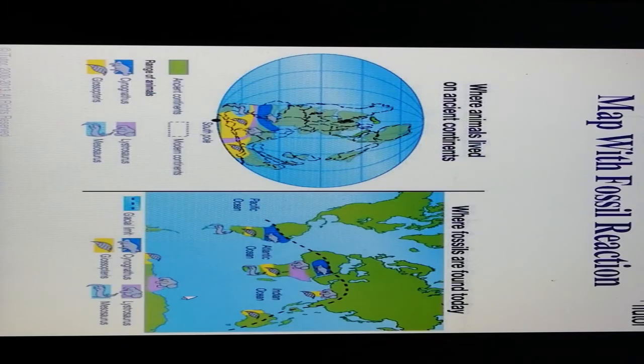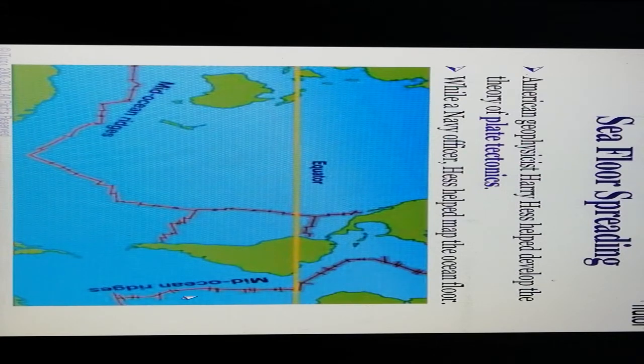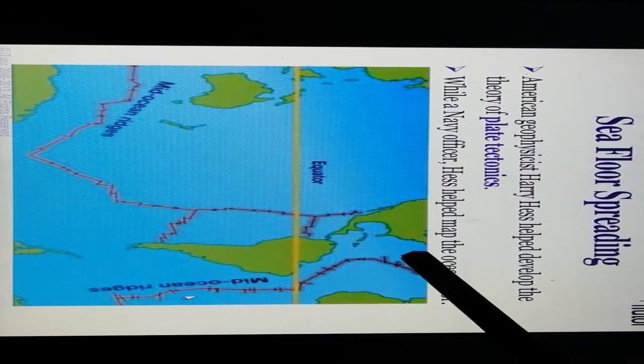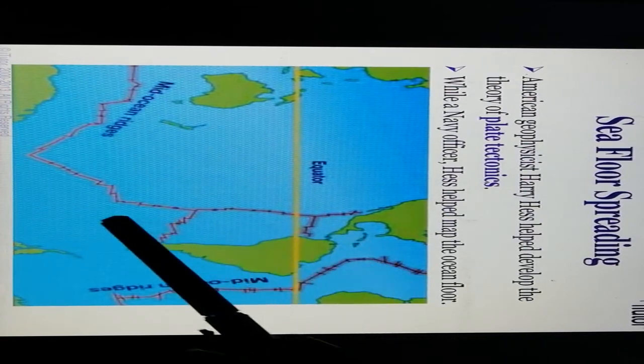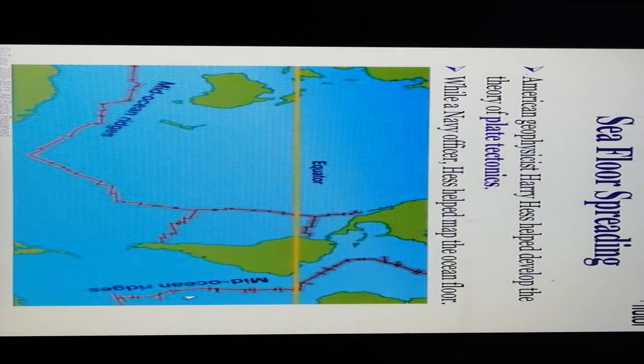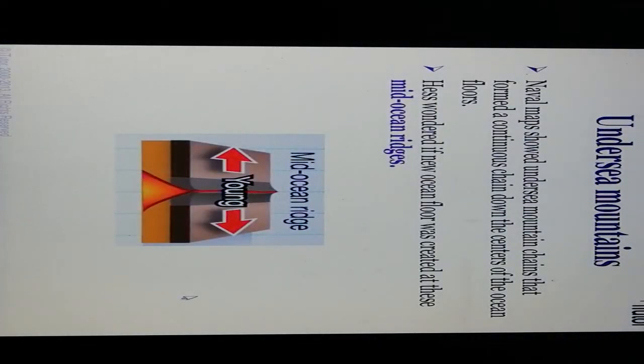Sea floor spreading: American geophysicist Harry Hess helped develop the theory of plate tectonics while serving as a navy officer, helping map the ocean floor. This shows the sea floor mid-oceanic ridge part and the mid-oceanic ridges near the equator. Naval maps showed underwater mountain chains forming a continuous chain down the centers of ocean floors. Hess wondered if new ocean floor was being created at the mid-oceanic ridges.